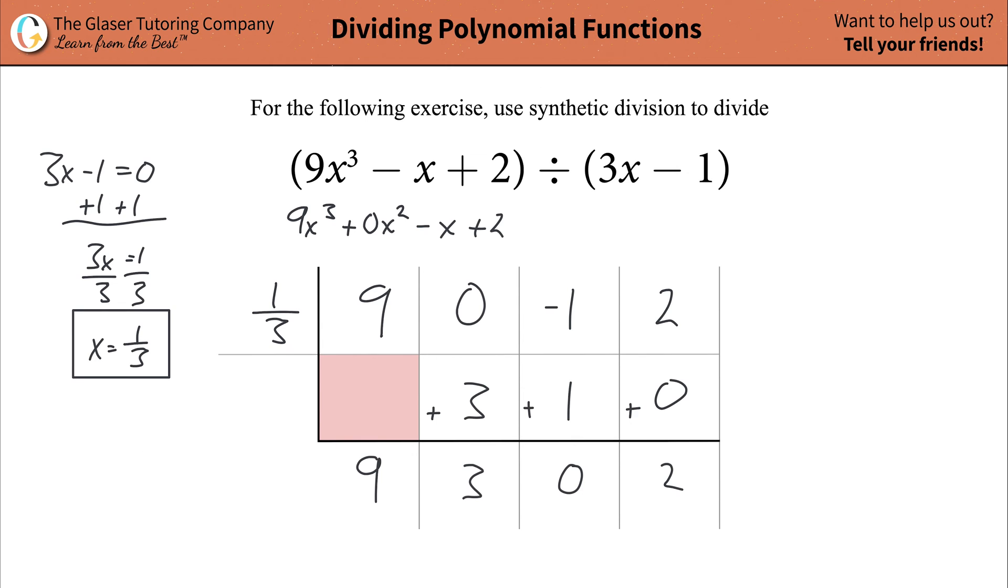Now what you have to do is just keep in mind what these coefficients will represent. Basically, this is what it is. This will be your remainder, always. The next term here is your constant term, your coefficient, your constant, coefficient of the constant, but that's really just the constant. So it's just a constant term. Then this represents the coefficient of your x term. Then this represents the coefficient of the x squared term, and so on.